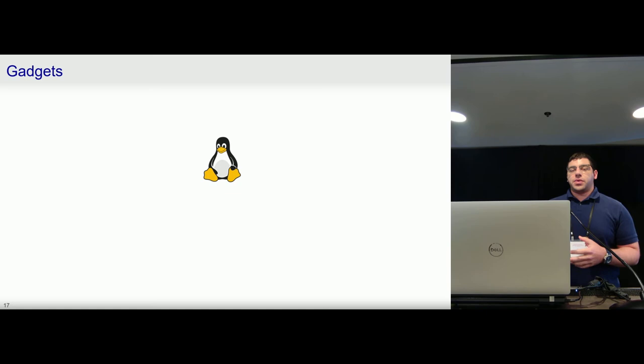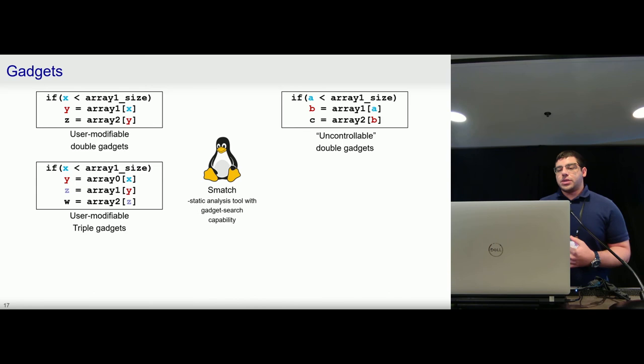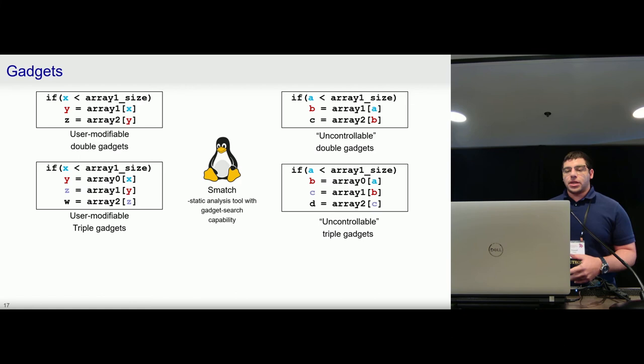So now the question remains of how does this affect the presence of gadgets in real-world code? So we used an early gadget search tool that was an extension of Smatch, which was a tool designed to find security bugs in the Linux kernel. And this tool finds gadgets by looking for snippets of code where there are nested array accesses where an unprivileged user has control over the value X. We extended this tool to look for triple gadgets with the same condition of controlling X, as well as double gadgets where this variable was unmodifiable by an unprivileged user—so in this case the variable A—and triple gadgets with the same unmodifiable condition.